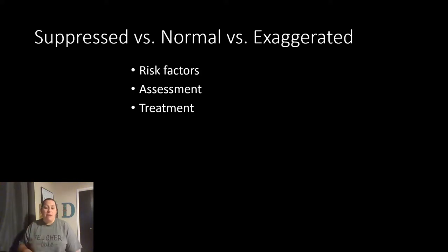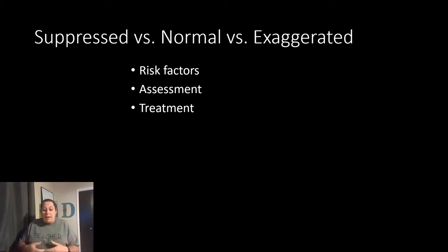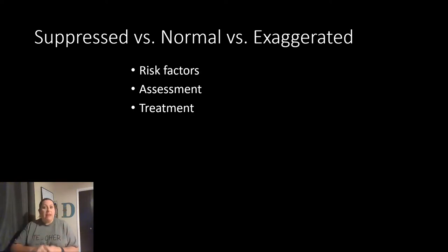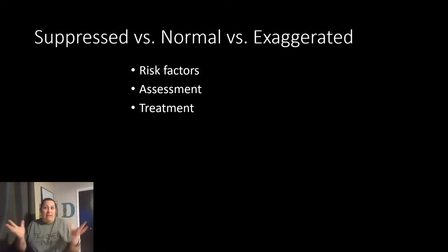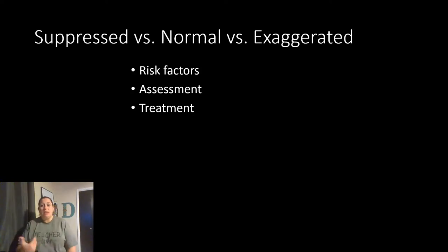Now let's talk about assessment — how do we look at somebody and see if their immune system is suppressed, exaggerated, or normal? You always need to take a history that includes past medical history as well as current — including medications they've taken and treatments they've had, as these could give good indication of what might be going on. Another thing we always do is a physical exam, looking for certain potential red flags. For a suppressed immune system, you may find that the individual has poor nutrition, which can cause wasting syndrome with lots of weight loss, fatigue, and malaise.